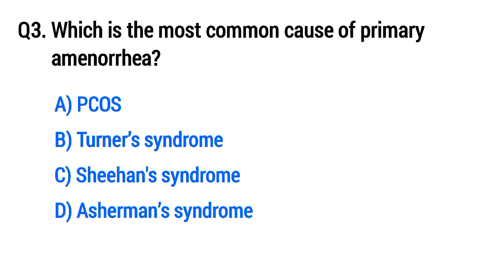Question No. 3: Which is the most common cause of primary amenorrhea? The right option is B, Turner syndrome.